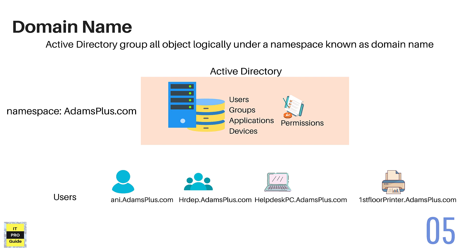A printer can be identified by its fully qualified domain name, such as firstfloorprinter.adamplus.com. The namespace or domain name is configured when you implement Active Directory, and all objects — users, groups, desktops, computers, printers — stored in Active Directory are identified by the format: object name dot domain name.